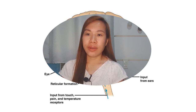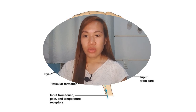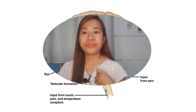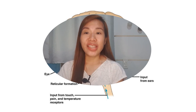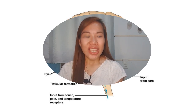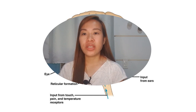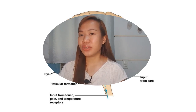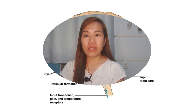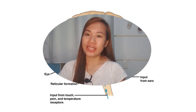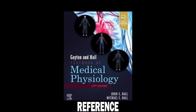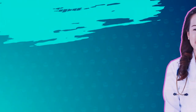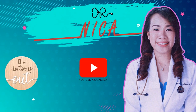That ends our lecture for the motor function of the cortex and brainstem. It's a little overwhelming to understand all these terms, but you just have to listen to it or read it over and over, and it will be easier to remember. Remember your final common pathway as a medical student - to get your license and become great doctors someday. See you on the next lecture video.